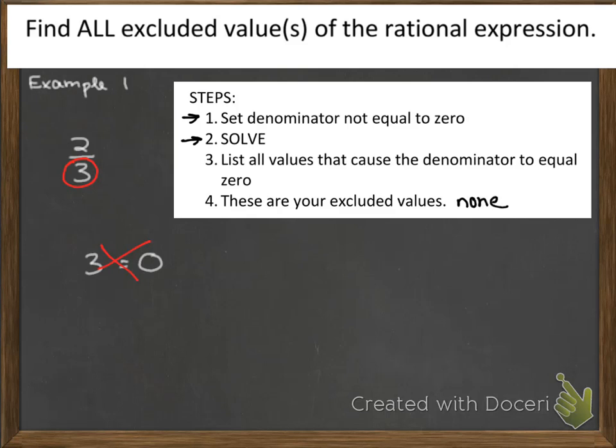Let's do another example. 2x divided by 3. Again, the first step is to find my denominator. My denominator is 3. If I set 3 equal to 0, once again, 3 is never going to be equal to 0. So this really doesn't make sense. So that means that I don't have any restricted values, or excluded values rather, so again, I can write none here.